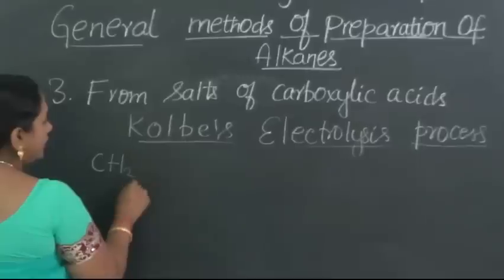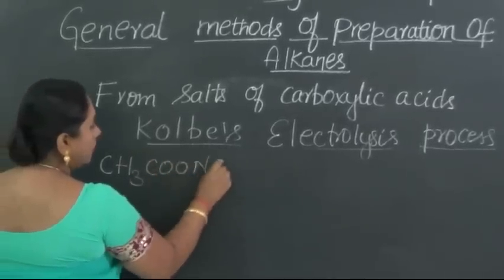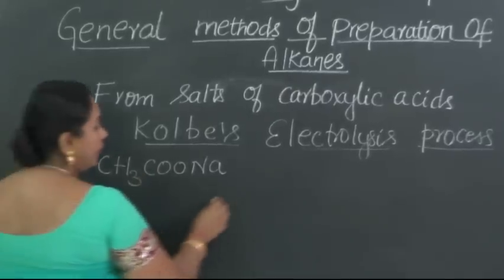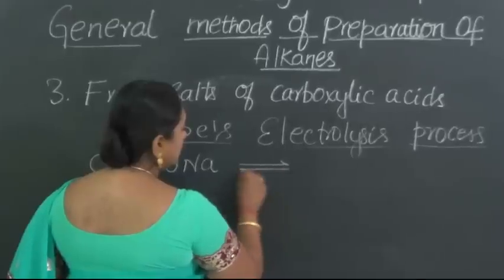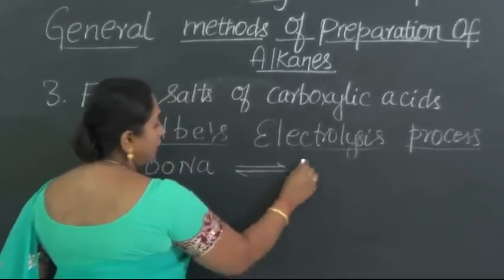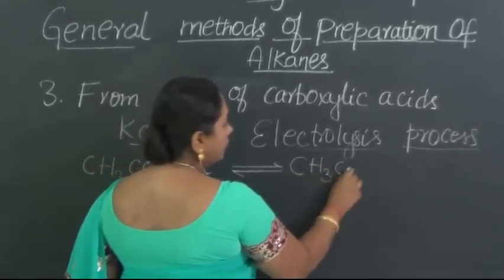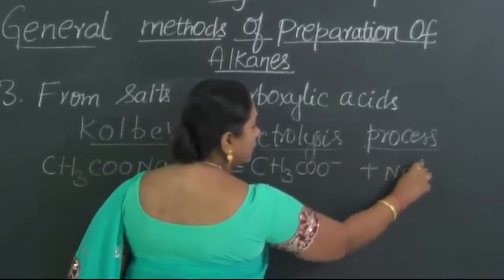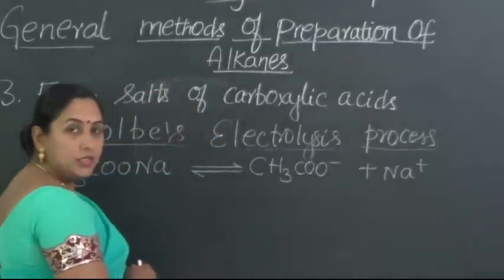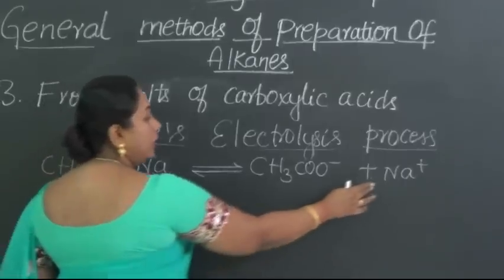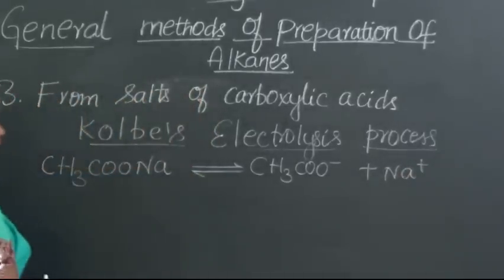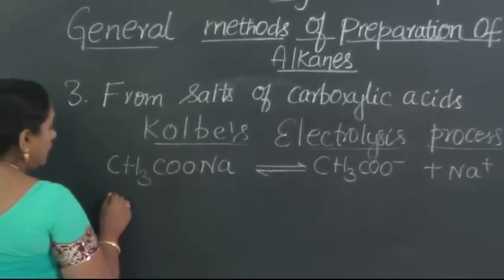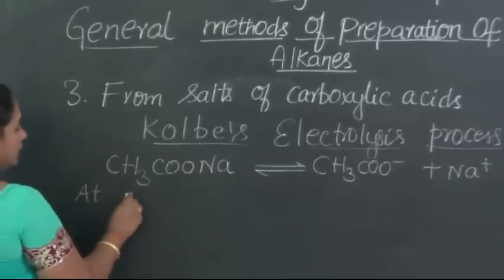We have taken sodium salt of carboxylic acid. Sodium acetate or sodium ethanoate when put into the solution, it is a strong electrolyte. It immediately ionizes forming acetate ion and sodium ion. Acetate ion is negatively charged ion and sodium ion is positively charged ion. Now, they start moving towards the respective terminals. Let us see what happens at each terminal.